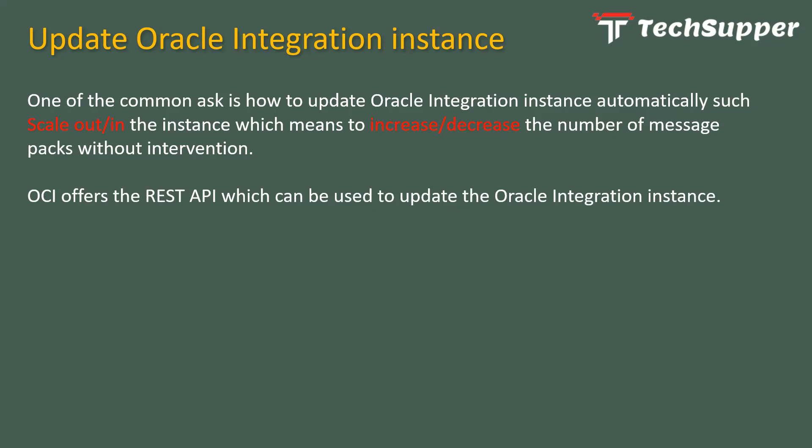To do this task, OCI — Oracle Cloud Infrastructure — offers a REST API which can be used to update an Oracle Integration instance. There is one dedicated REST API for this, and we are going to leverage it from within OIC itself.